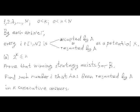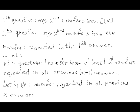We will assume that capital N is greater than lowercase n; otherwise B would simply specify the entire list without asking any questions and would win. In the first question, B can specify any 2^(K−1) numbers from the initial list 1 through capital N. That guarantees more than 2^(K−1) numbers remain in the list, so that after any answer to this question, there will be at least 2^(K−1) rejected numbers.